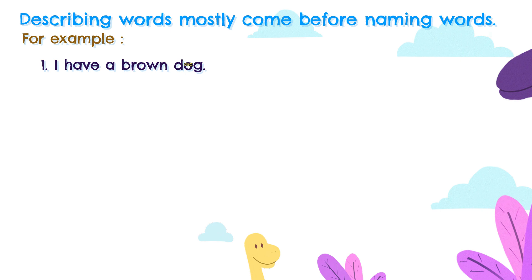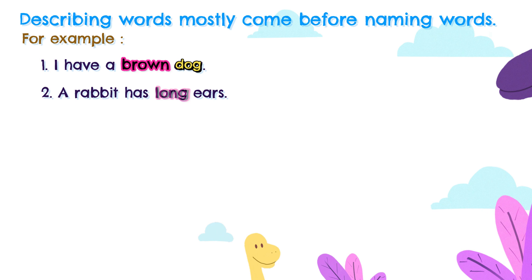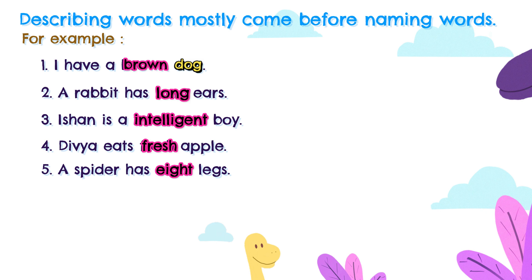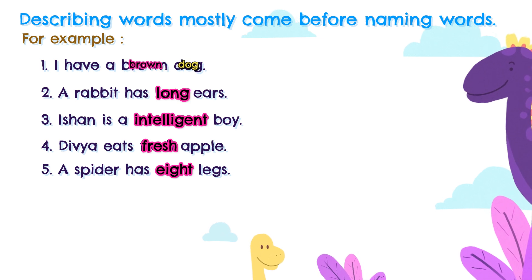For example: I have a brown dog. How is the dog? Here dog is brown — brown is a describing word. A rabbit has long ears. How are the rabbit's ears? Long — long is a describing word. Ishan is an intelligent boy — the word intelligent tells about how the boy is. The bear eats a fresh apple. A spider has eight legs — eight is a describing word.